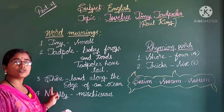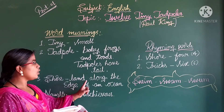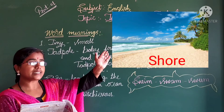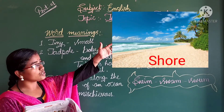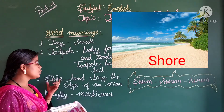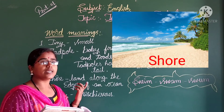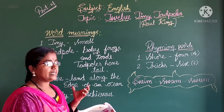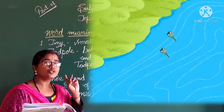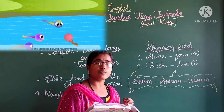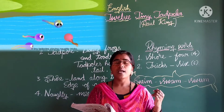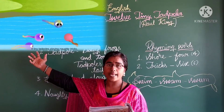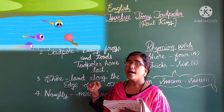These tadpoles are swimming near the shore. Swimming near the shore - what does shore mean? Shore means land along the edge of an ocean. You can see in the picture - the edge of the ocean, there will be land. That land we call shore.